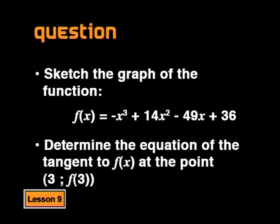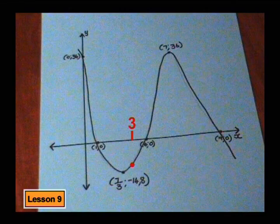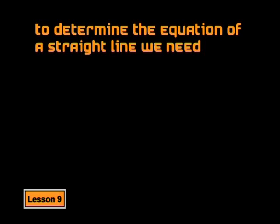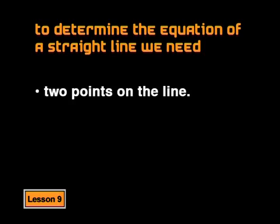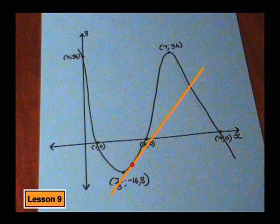Now we need to deal with the second question - the question of the tangent. We were asked to determine the equation of the tangent to f of x at the point (3, f of 3). So we need to think about a point on the graph that has an x-value of 3, and then draw a tangent through it. Our job is to find the equation of this tangent. To determine the equation of a straight line, we need either two points on the line, or a point on the line and the gradient of the line.